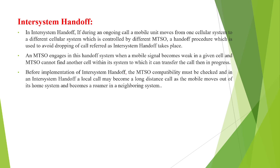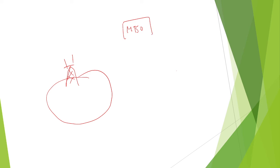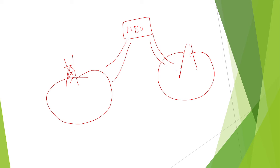One more type is inter-system handoff. This involves one cell site to another cell site within the same MTSO. Every MTSO covers a particular number of cell sites — for example, this MTSO has 12 cell sites. If the call is transferred within the same MTSO, then it is an inter-system handoff.